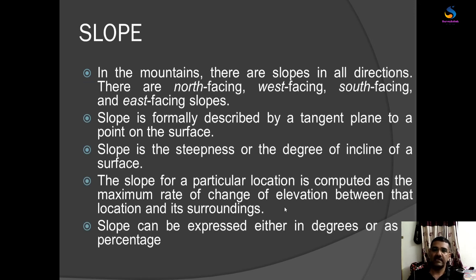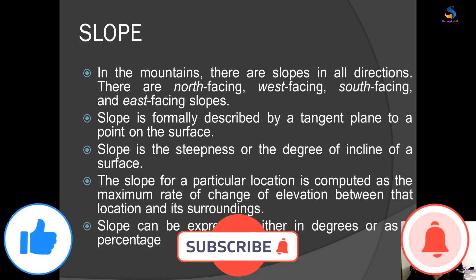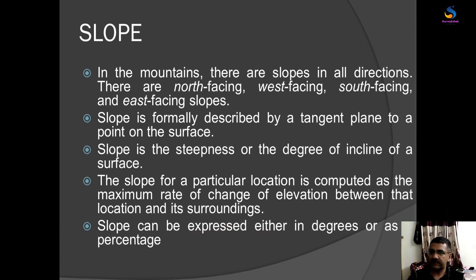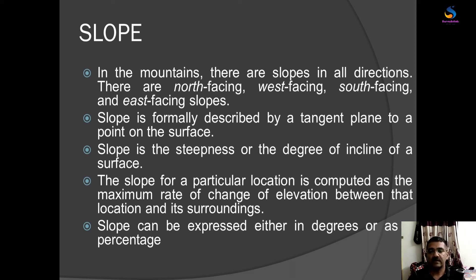I hope you understand the definition of slope and what slope means. Slope is the tangent from a point on a surface to the plane. If you are standing on a plane surface and there is a point on a hill, drawing a tangent to that point is called a slope. And aspect is the direction of slope from a location.